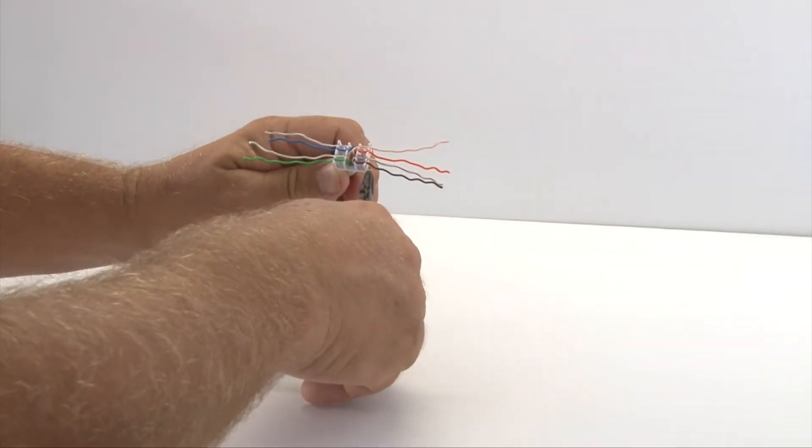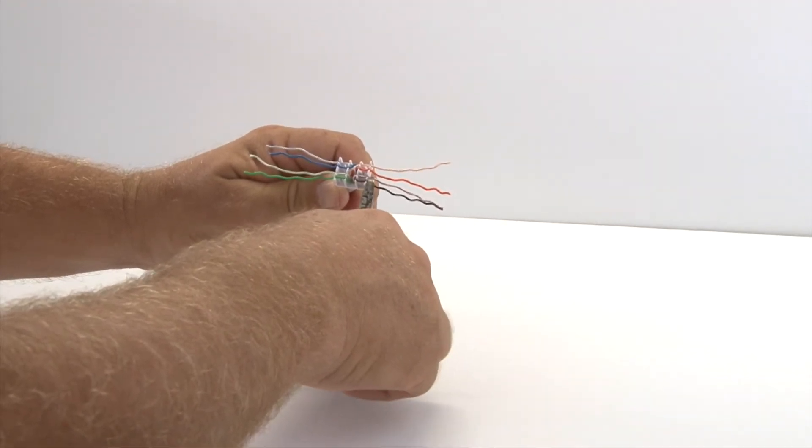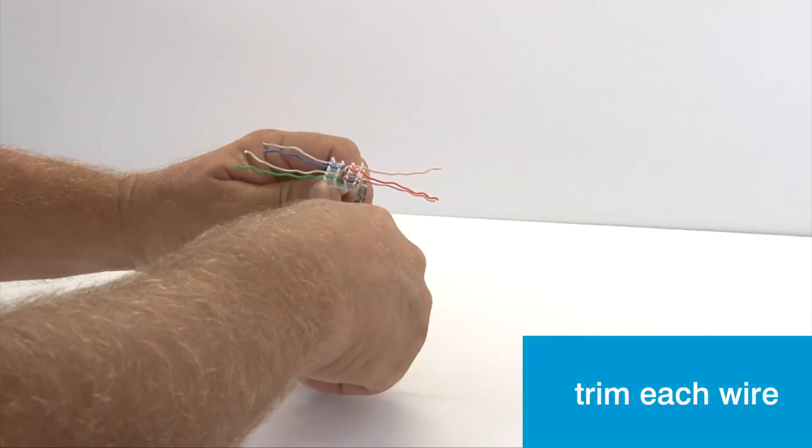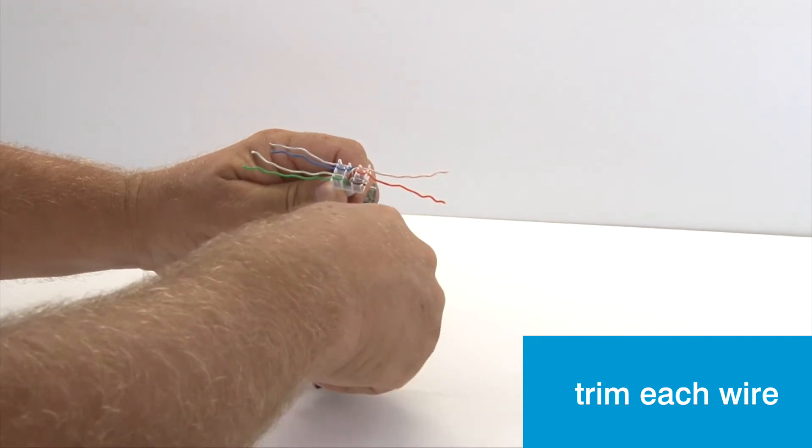Repeat this with each pair until all the wires are in their correct slots. Then, with the side cutters, simply trim each wire.